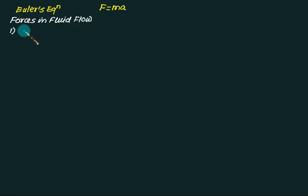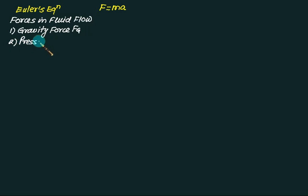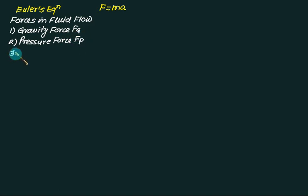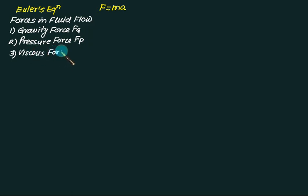Number one force is the gravity force — gravity force is nothing but weight, that is Fg. Number two is pressure force, which is the product of pressure multiplied by area. Number three, from Newton's law of viscosity, we have viscous force, given as tau equals mu times du/dy.